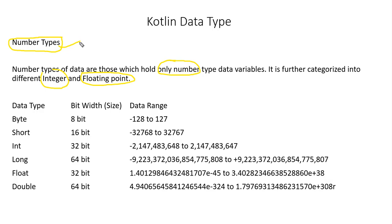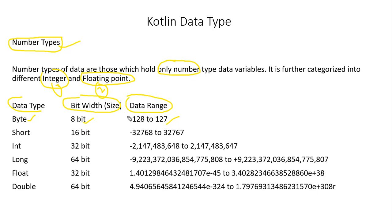Numbers data type can hold only numbers, and it has been categorized into two types: one is integer and the other is floating point. Looking at the data type table here, you can see the bit width or size and the range. First, the byte data type has 8 bits, and its range is minus 128 to 127.